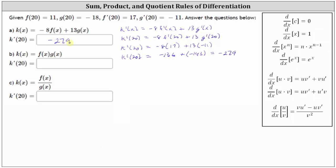For part b, we are given k of x equals f of x times g of x. Here to find k prime of x, we'll need to apply the product rule of differentiation shown here on the right. So now k prime of x is equal to the first function f of x times the derivative of the second function, which is g prime of x, and then we have plus the second function g of x times the derivative of the first function, which is f prime of x.